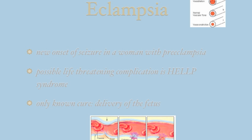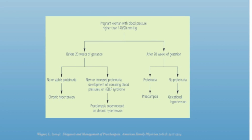Women who develop HELLP are critically ill and often end up being transferred to the ICU after delivery. Review this diagram of the two categories of hypertension, noting the differences in the clinical manifestations.